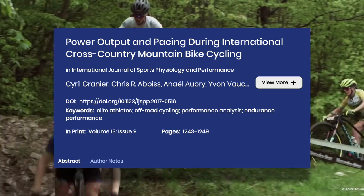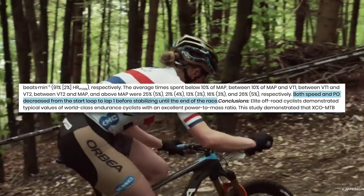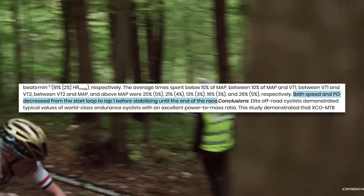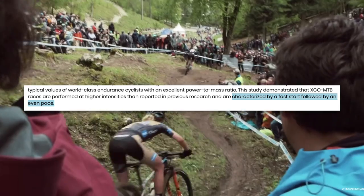Even in more variable races like cross-country mountain biking, maintaining even lap times seems to be the quickest way to finish. A study on the pacing of elite international XCO mountain bikers found that both speed and power output decreased from the start loop to lap one before stabilizing until the end of the race — the races are characterized by a fast start followed by an even pace. In events like cross-country mountain biking or cyclocross, it's important to start hard and then maintain pace until the finish. Typically, five minutes after the start you want to settle into your race pace. The more you stay on top of your nutrition and stay conservative at the start, the more even your pace should be. Even pacing takes a lot of self-control because there's always that temptation to go harder than you should at the start.